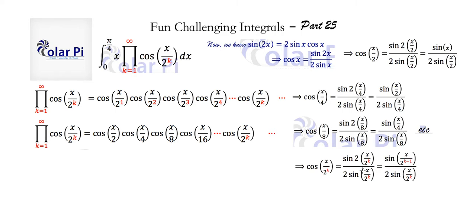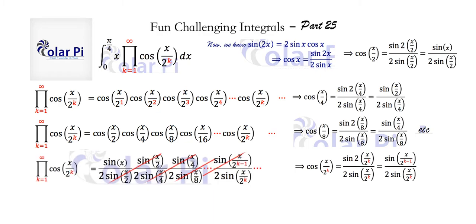Now you should guess what we're going to do. We're going to replace cosine of x over 2 with sine of x divided by 2 sine of x over 2, and similarly replace cosine of x over 4 and all subsequent terms. When we substitute for each of these in terms of sines, we get a sine of x over 2 in the denominator, but it has a counterpart in the numerator — so they cancel. Then sine of x over 4 cancels with its counterpart, and sine of x over 8 cancels similarly, and this process keeps going with the dot dot dot.